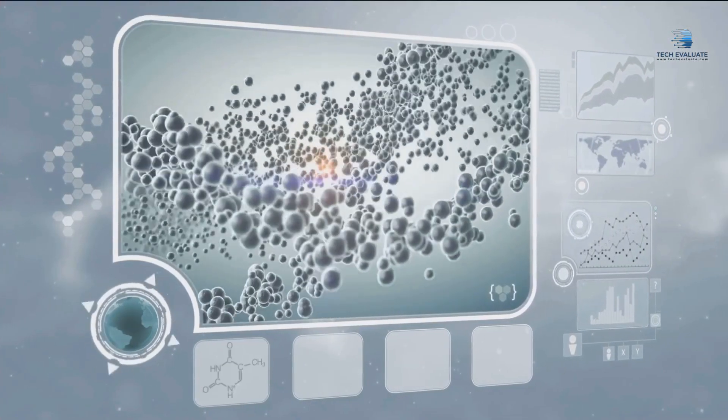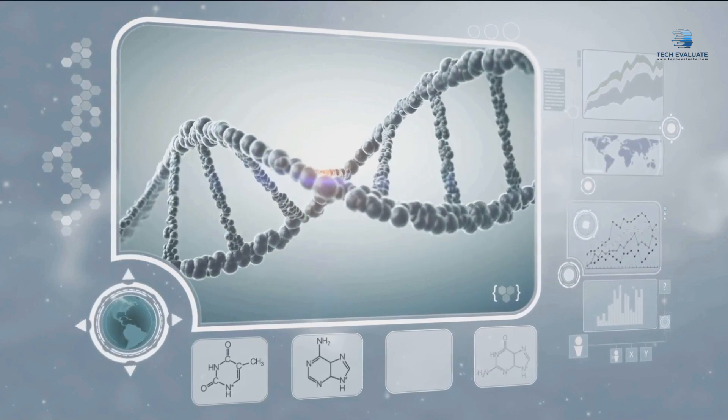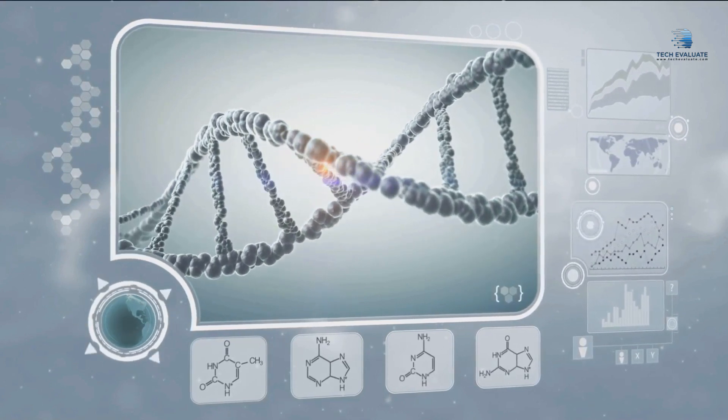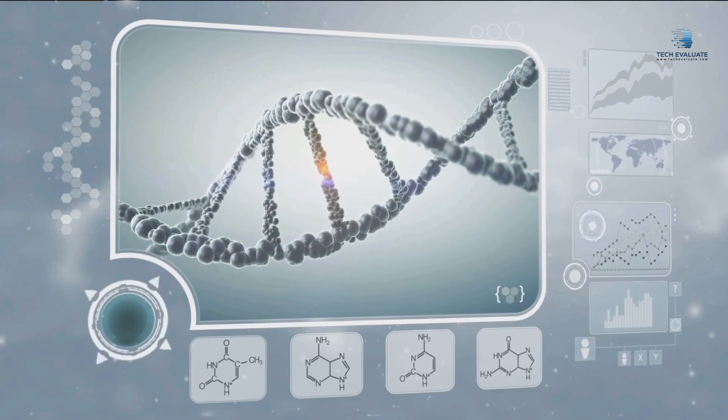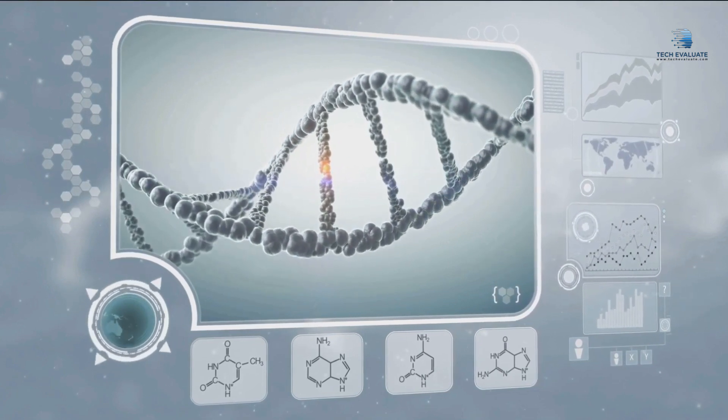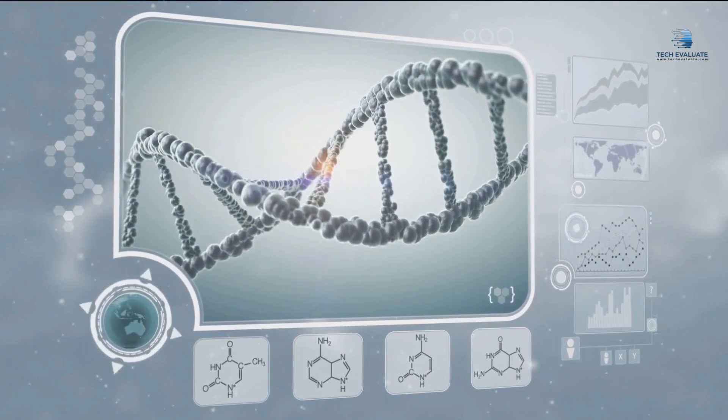If you consider digital data, it is split up into zeros and ones of binary code. However, a DNA molecule has four base pairs (A, G, C, and T), which means you can fit more data in a smaller space.